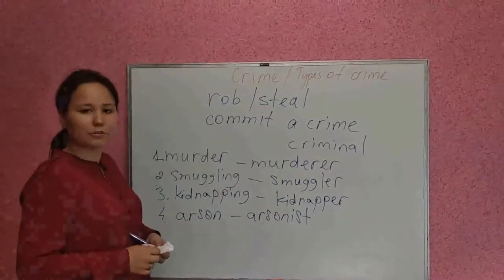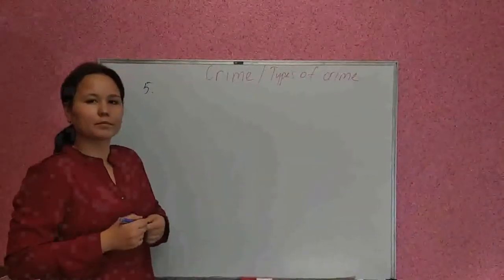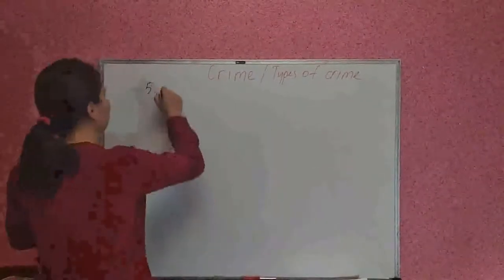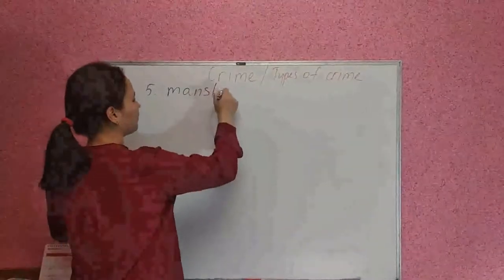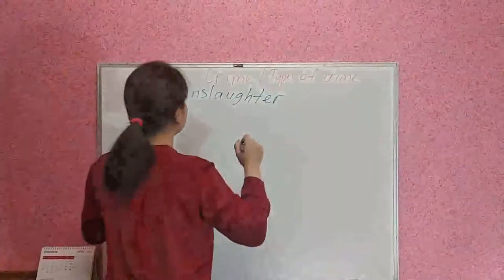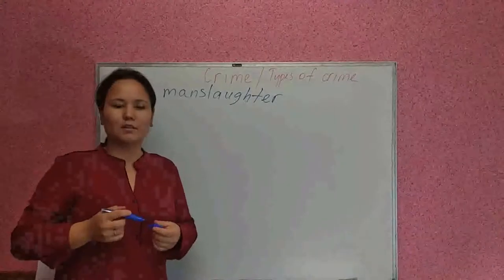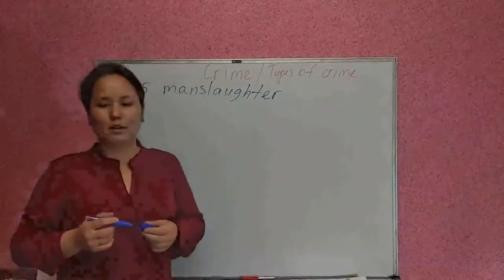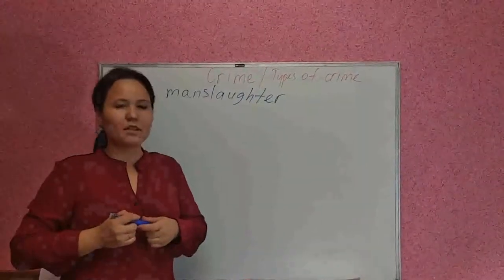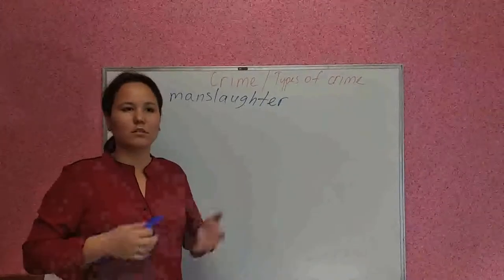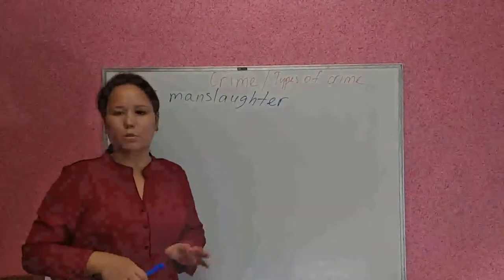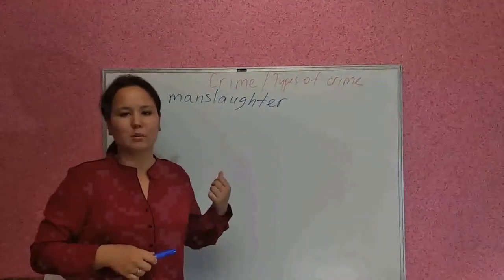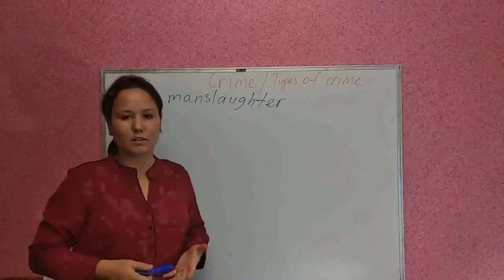Number five is manslaughter — a little bit complicated to spell. Manslaughter means killing someone accidentally, by negligence. This happens accidentally, not on purpose. And there is no specific name for a person who commits this crime because this is done unintentionally.